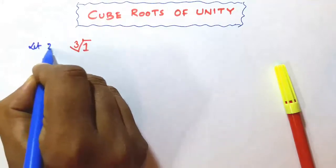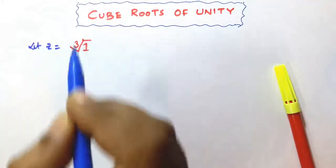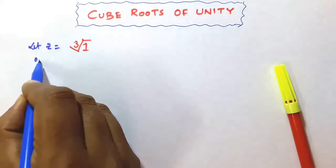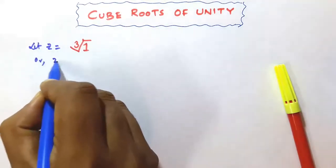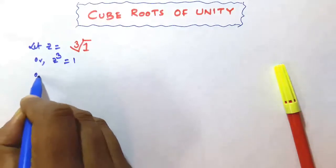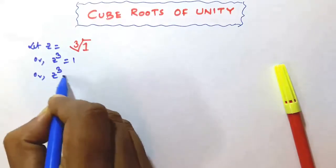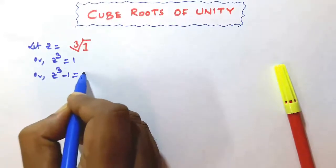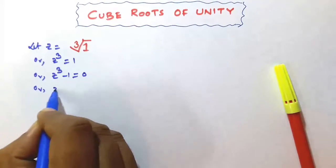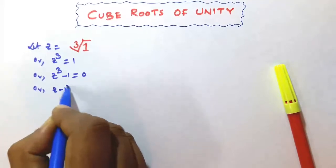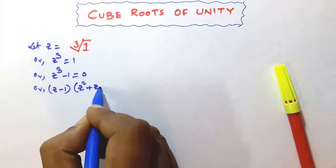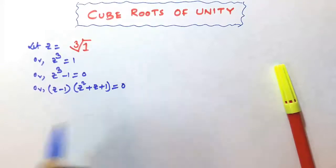Let z be equal to the cube root of 1. Cubing both sides, z cube is equal to 1, or z cube minus 1 is equal to 0, or z minus 1 into z squared plus z plus 1 is equal to 0.